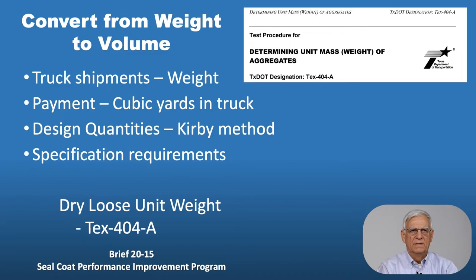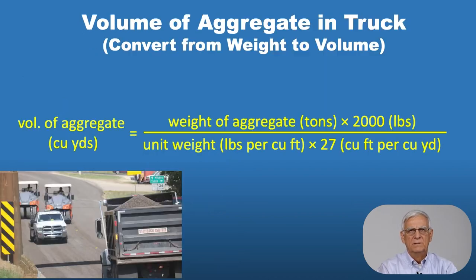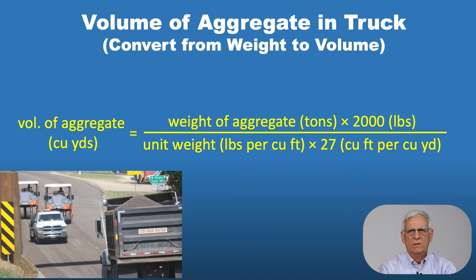The dry loose unit weight test, Texas Method 404A, is utilized to measure the dry loose unit weight of aggregates and is an integral part of the whole process. If we wanted to know the volume of aggregates in a truck in cubic yards given the weight of the aggregate in tons, we use this equation: weight in tons times 2,000 pounds per ton, divided by the unit weight in pounds per cubic foot times 27 cubic feet per cubic yard. The 2,000 and 27 are just unit conversions to get from tons to pounds and from cubic feet to cubic yards.